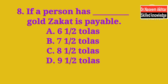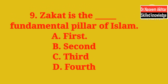MCQ 8: If a person has dash gold, Zakat is payable. کتنے سونے پر Zakat بنتی ہے؟ A. 6.5 tolas, B. 7.5 tolas, C. 8.5 tolas, D. 9.5 tolas. The correct answer is B — 7.5 tolas. ساڑھے سات طولہ سونے پر Zakat بنتی ہے۔